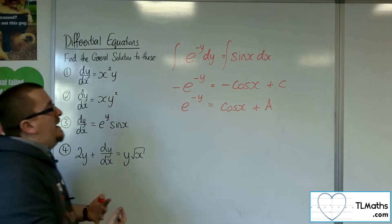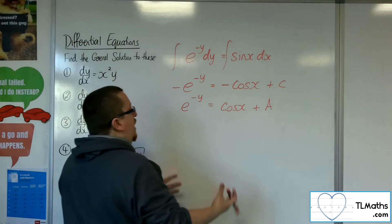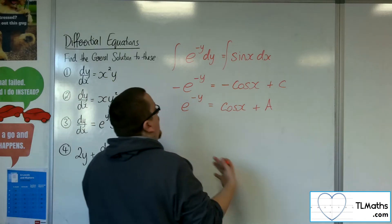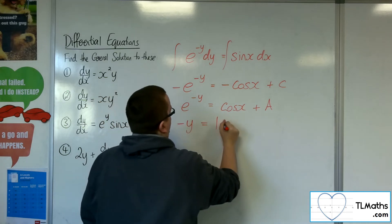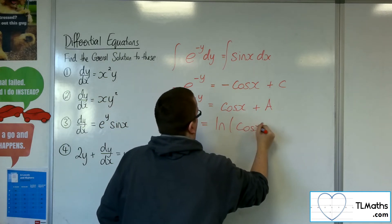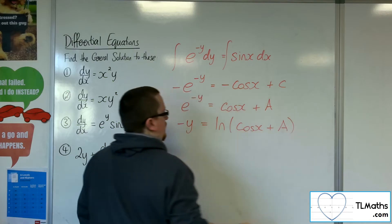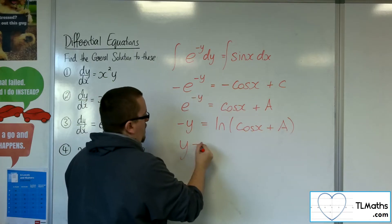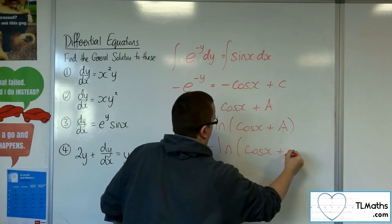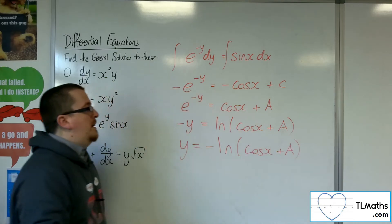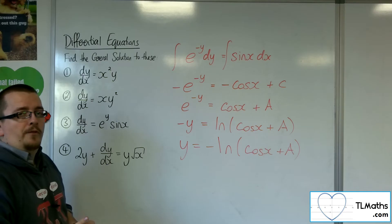Now, at this stage, I can keep going to get y equals, I can log both sides. And then I can multiply through by minus 1. So that would be my simplified solution.